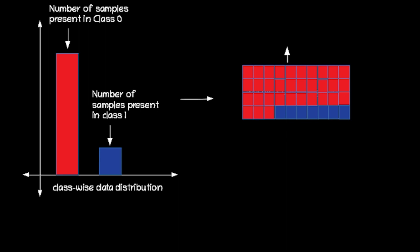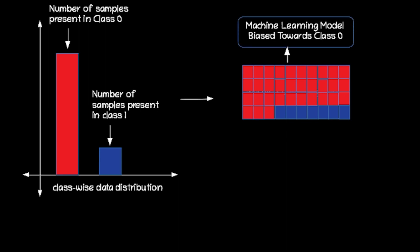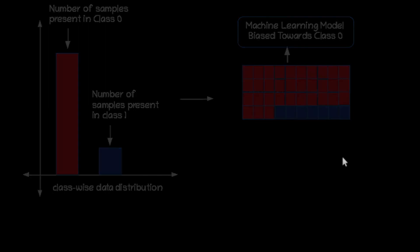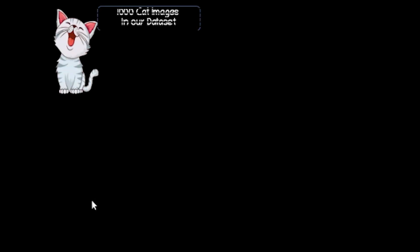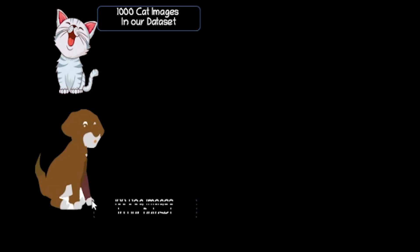That means our machine learning model is biased towards class 0. Let's check another example: we have a dataset consisting of 1000 cat images and 100 dog images. This significant difference in the number of samples between two classes reflects a data imbalance. In this case, the cat class is the majority class with 1000 images while the dog class is the minority class with only 100 images.